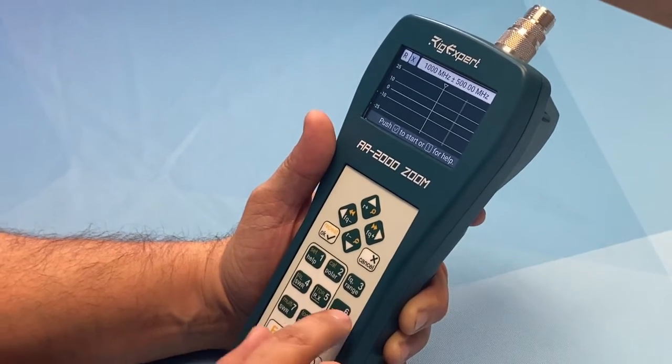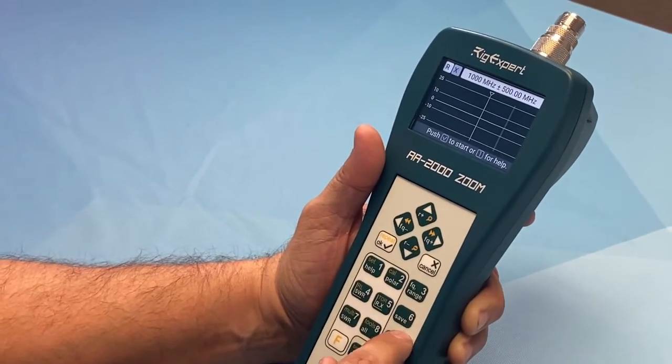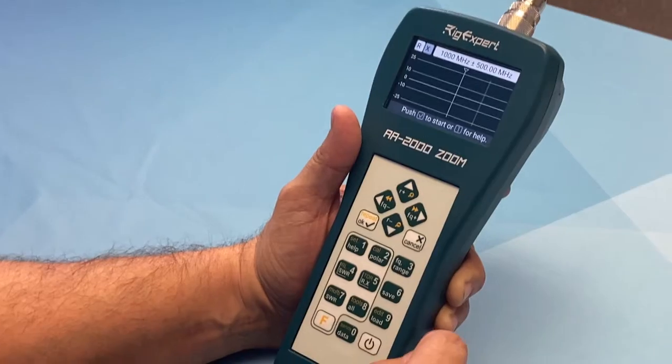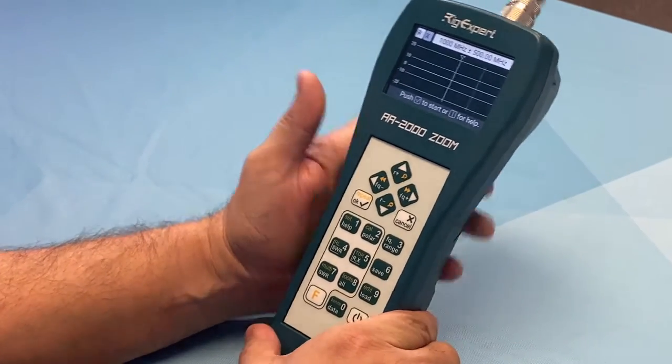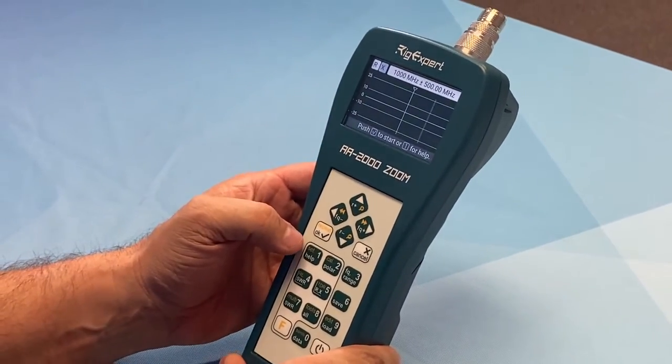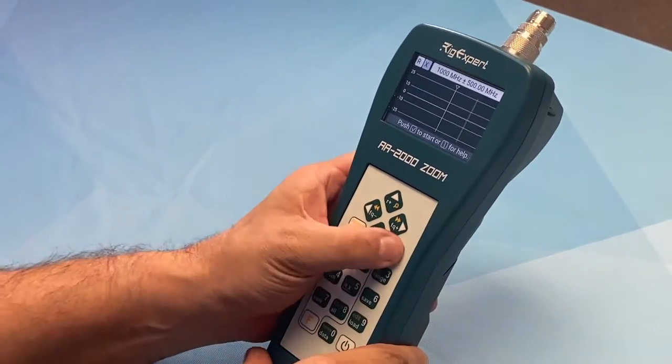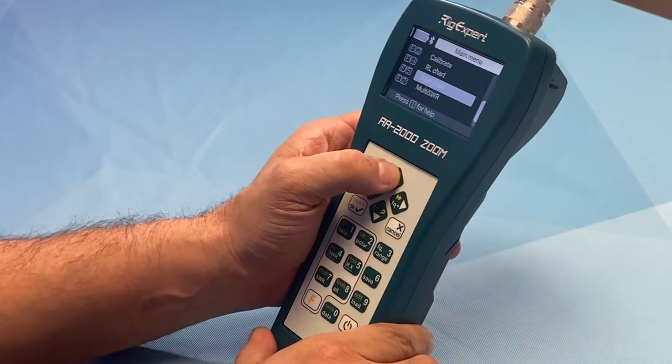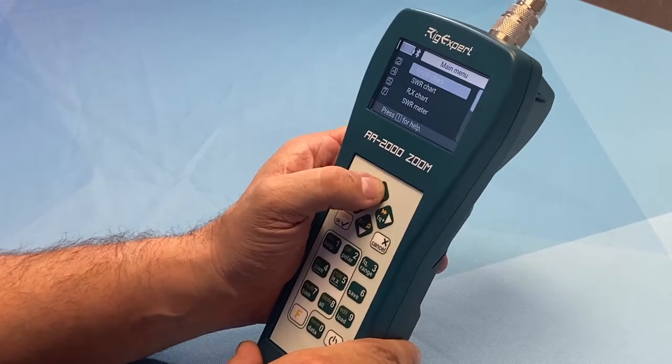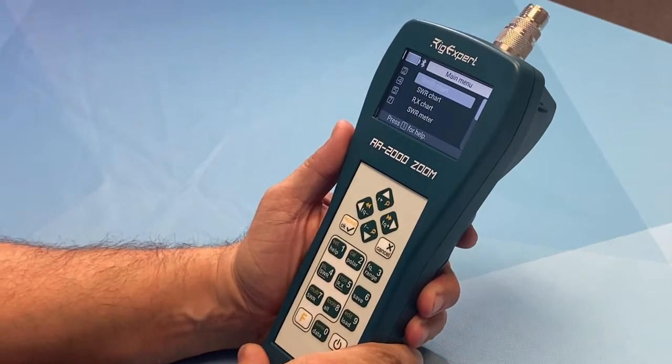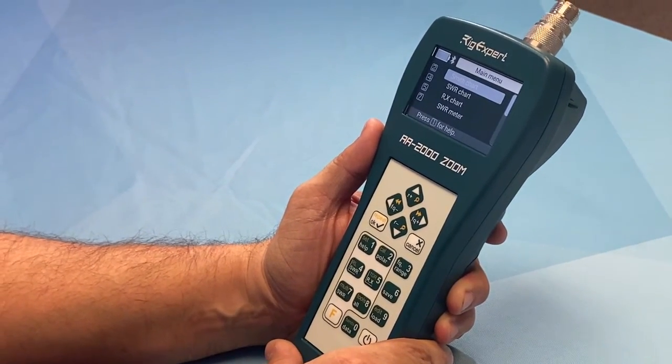RX chart, save. You can save to the unit. A lot of people don't do that. A lot of that is if you hook this to your computer, everything will be done for you. And that is some of the options of the Rig Expert AA 2000 Zoom.